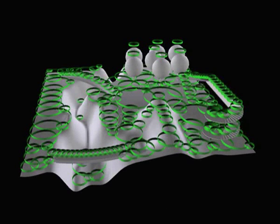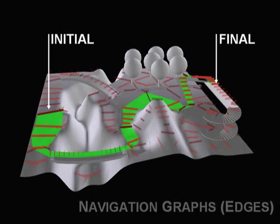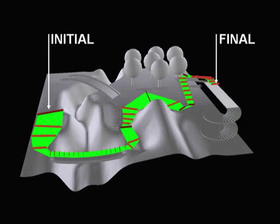Navigable areas are modeled as cylinders which are connected by edges when overlapping. Edges are gates at the vertices' intersections. A path search in the navigation graph allows navigation planning. The result is a corridor leading to the goal.